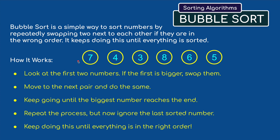Repeat the process but now ignore the last sorted number. Keep doing this until everything is in the right order. So once we've done one pass, there still might be numbers in the wrong order. The eight will be correct at the end but we might need to do a second pass and possibly even a third pass to ensure that all the numbers are correct.